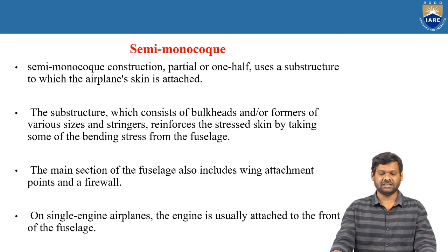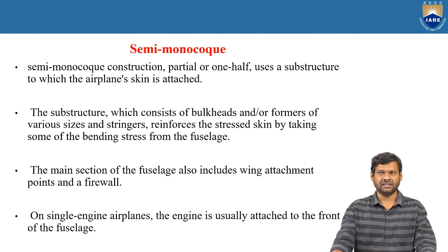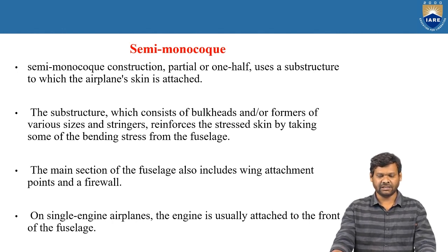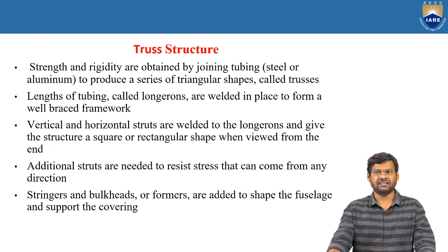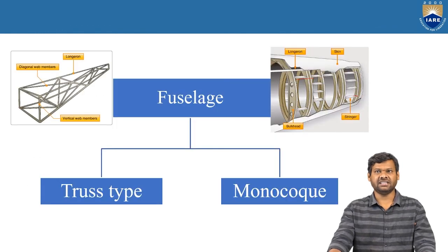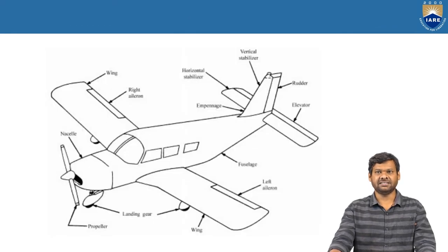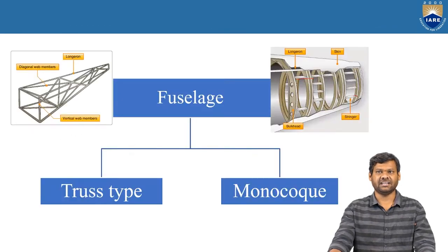The main section of the fuselage includes the wing attachment point. In a single engine airplane, the engine is attached to the front of the fuselage. As you have seen in the previous slides, the engine is attached to the fuselage — this is the case for the single engine aircraft.